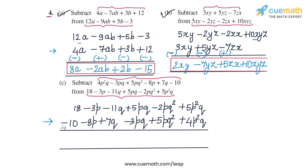So minus 10 will become plus 10, and we will have 18 plus 10 which is 28. Then minus 8p will become plus 8p, so we have minus 3p plus 8p which is plus 5p. Then plus 7q will become minus 7q, so we have minus 11q minus 7q which is minus 18q.